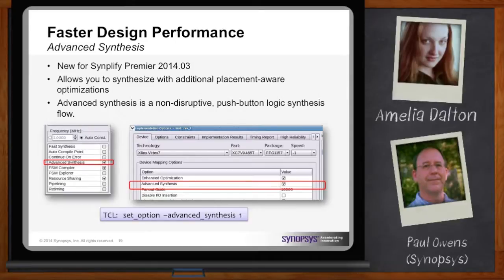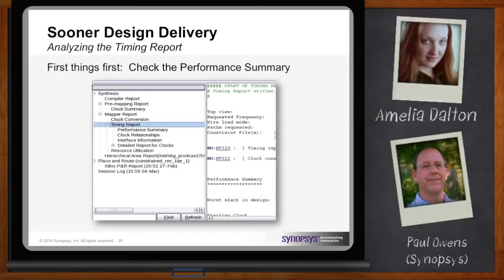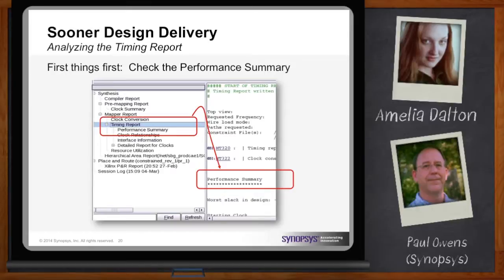First thing you want to look at is your timing report. You want to look at your final log file and click on the section on the timing report to see the performance summary. It'll list things like the clocks and the worst slack in the design, and you can analyze this to find if there are any clocks that have not been constrained.